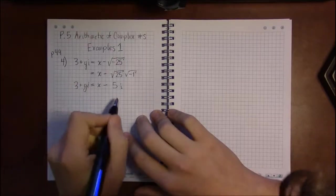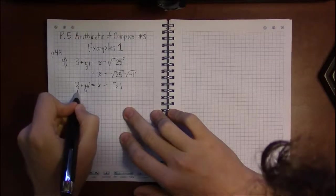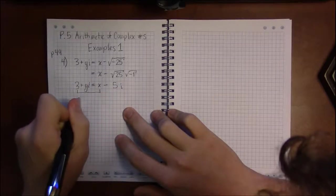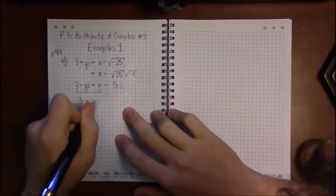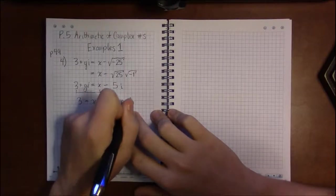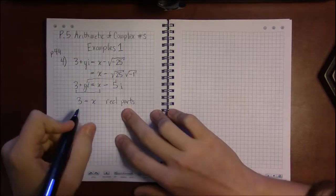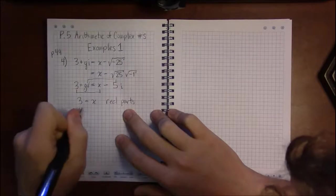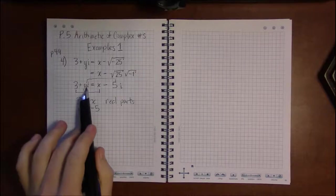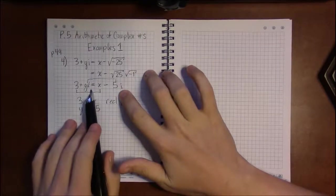The parts without the i's—the 3 on the left has to match up with the x on the right. These are the real parts and they have to be equal. The imaginary parts are the parts with the i's, so we have to have y equaling minus 5.